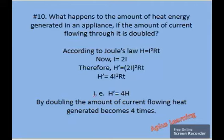Now, according to Joule's law, we have H equals I squared Rt. Now, instead of I, we have to take it as 2I. So, therefore, H dash becomes 2I the whole square Rt. That means, instead of I, now we have to substitute it as 2I.